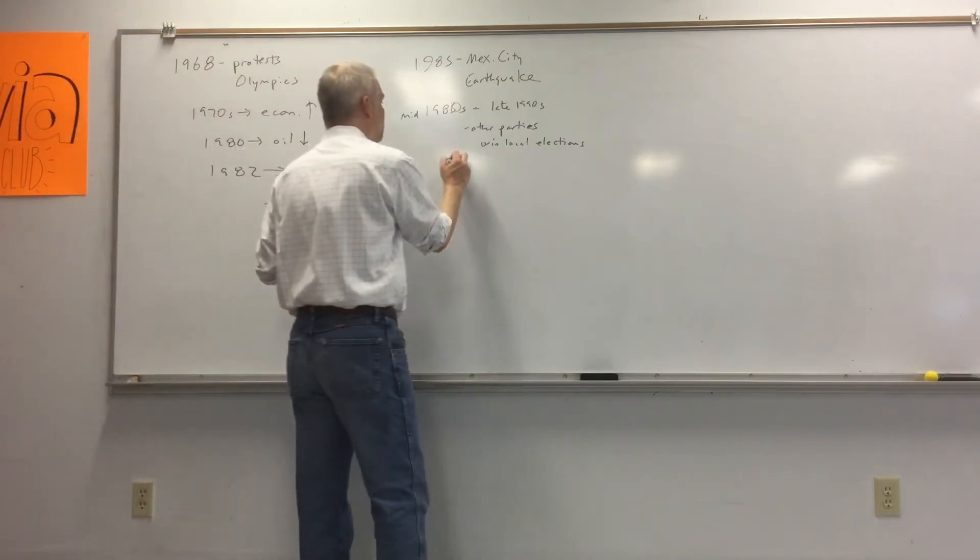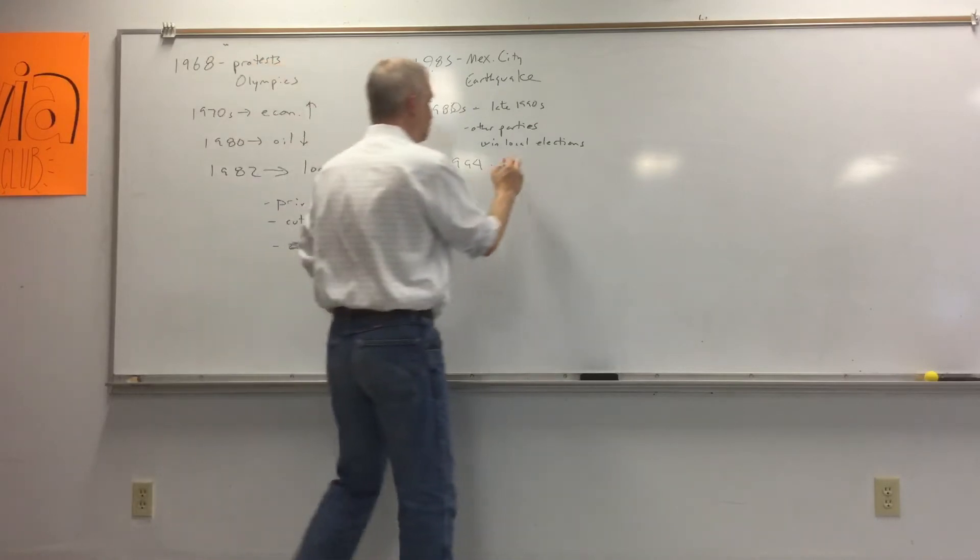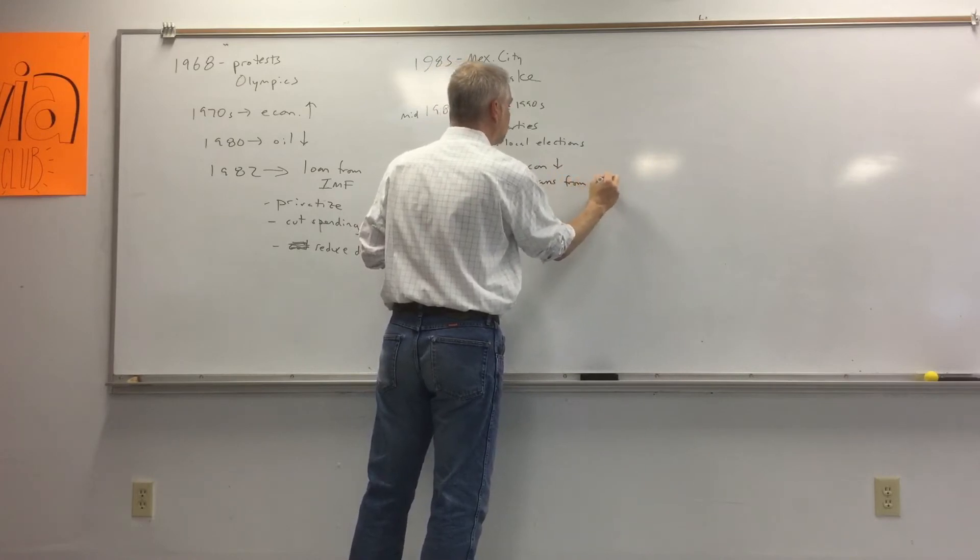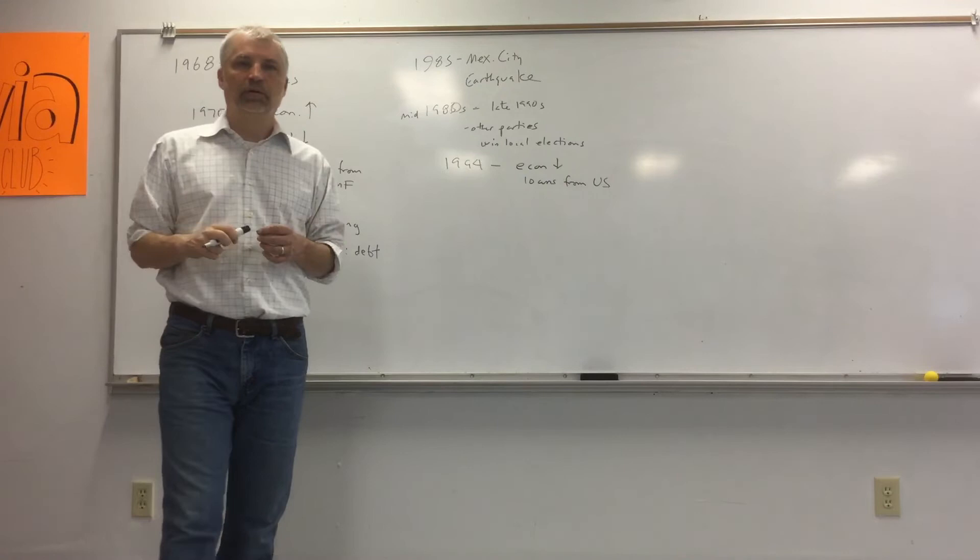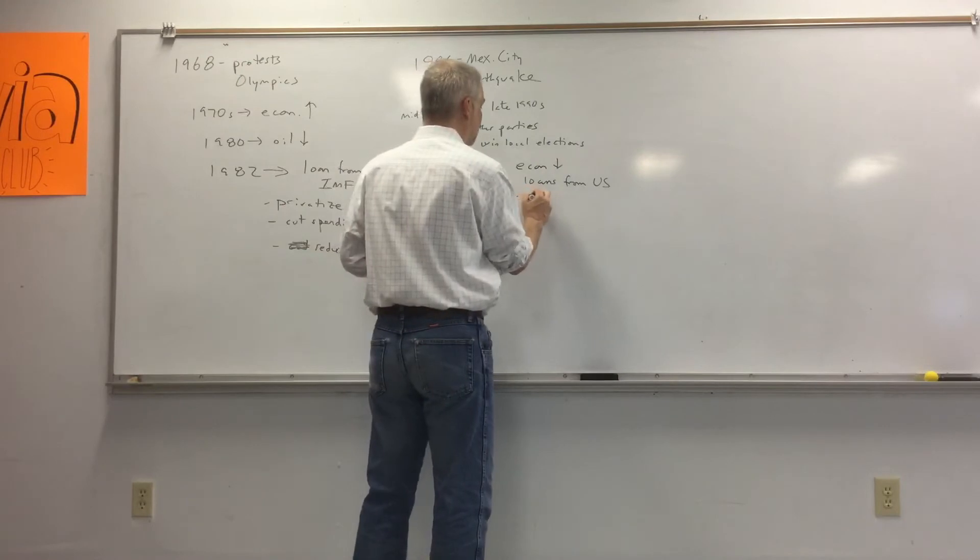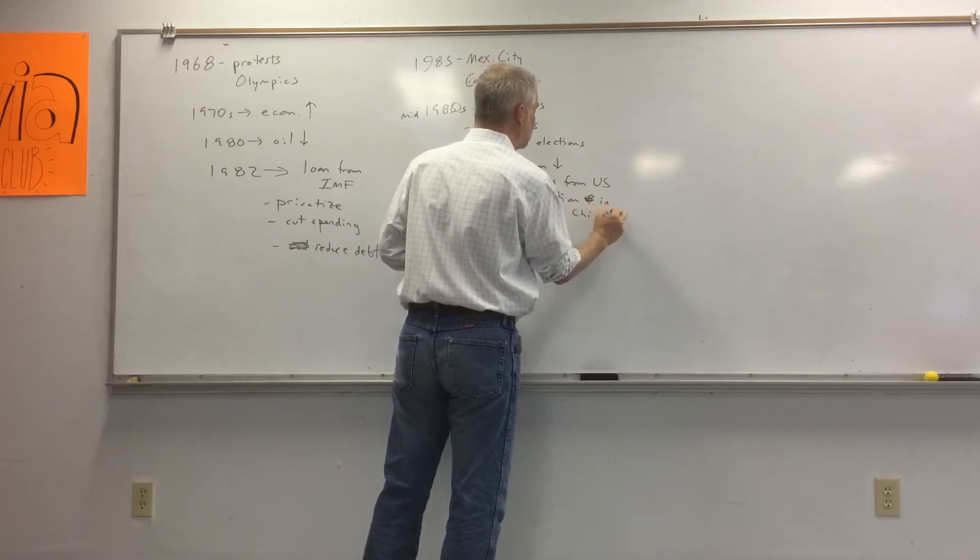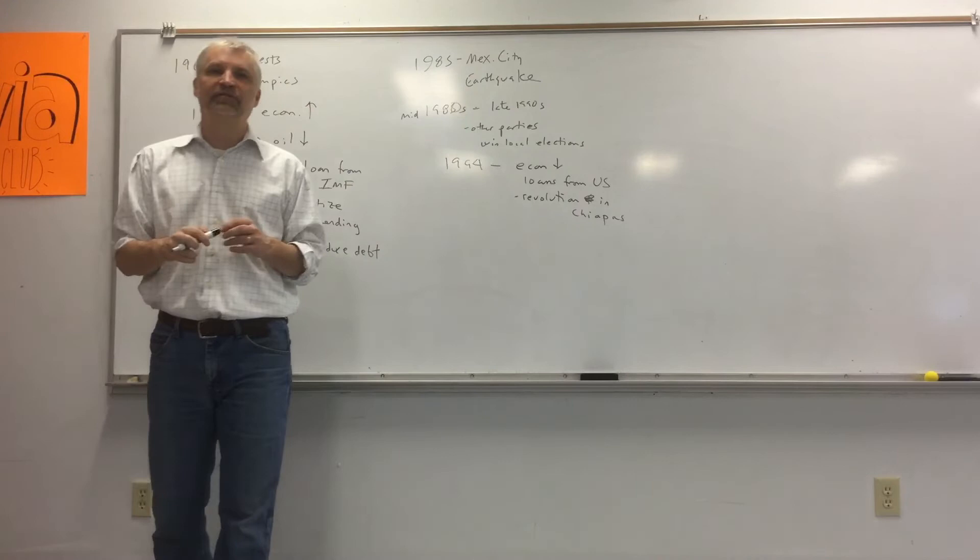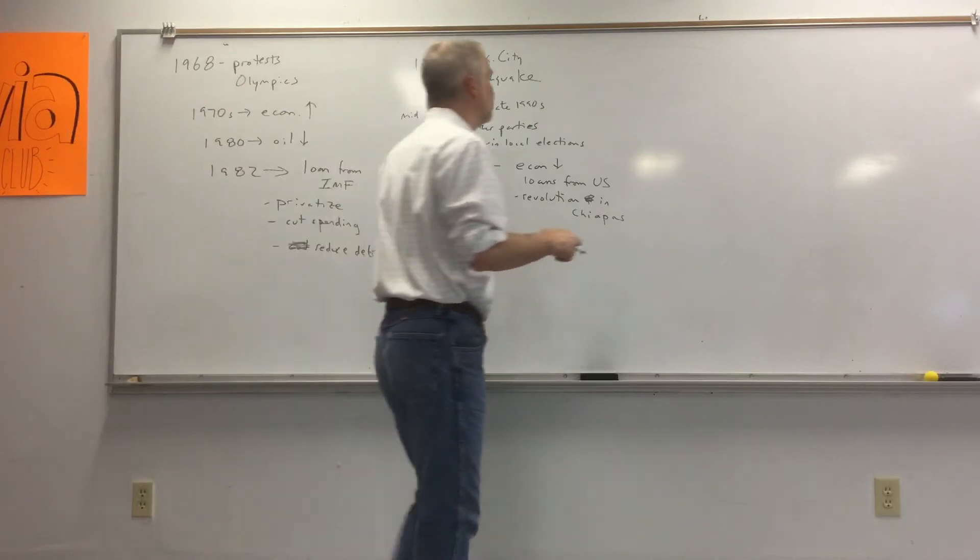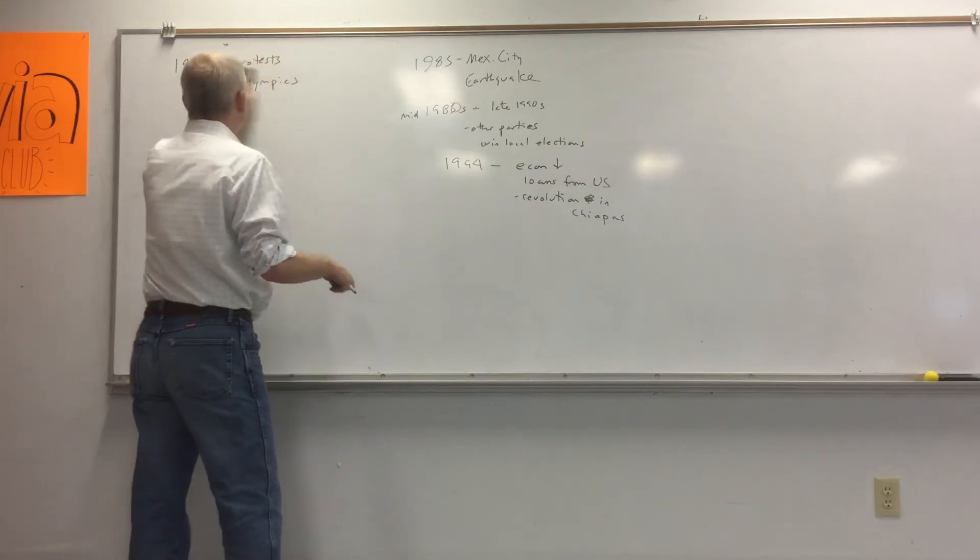Then 1994 is a big year for Mexico as well. In 1994, the economy goes down again, and so they have to take loans from the U.S. to bail them out because our economies are so intertwined. If their economy goes bad, it hurts us, so we loaned them some money. As we learned about in the scavenger hunt, there's kind of a low-level revolution in the south by some indigenous people who live in a state called Chiapas, who are not happy with what's going on in the government and are not getting the same support. And then also in 1994, something happens that's going to have a big effect on Mexico for the future.